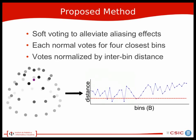In order to further reduce the effects of aliasing, we allow for soft voting. Each normal votes for up to four bins — the four closest ones — and the votes are weighted by inter-bin distance, so the closest bins receive more weight than the farther ones, as is done in many other descriptors.